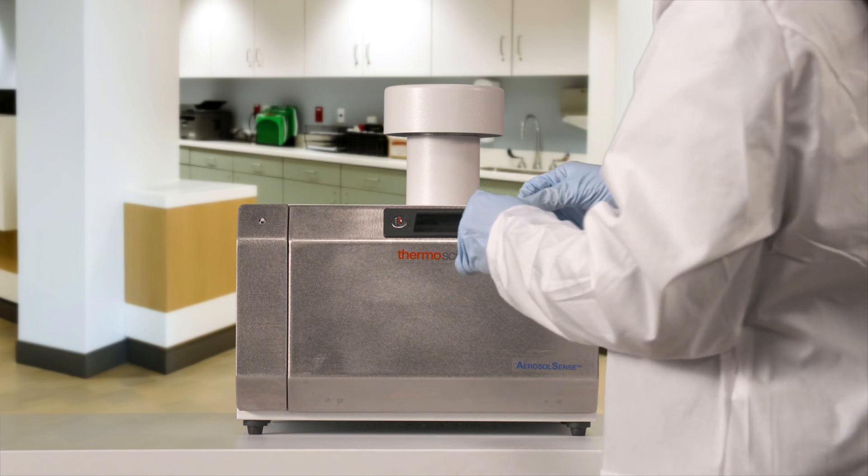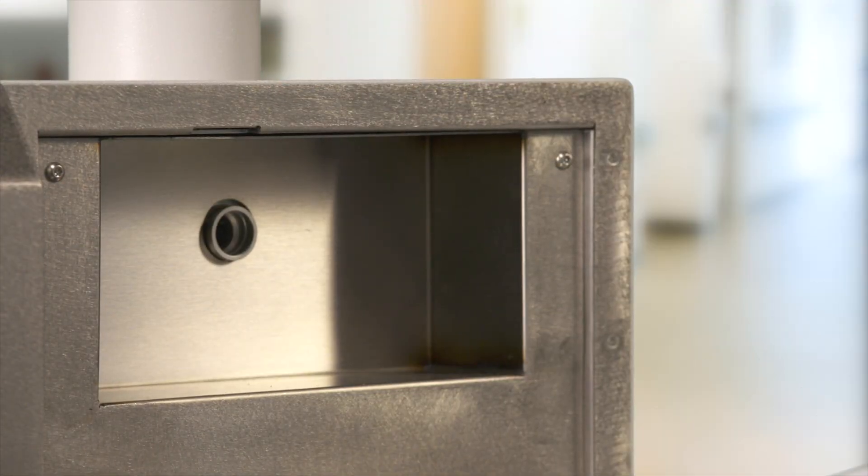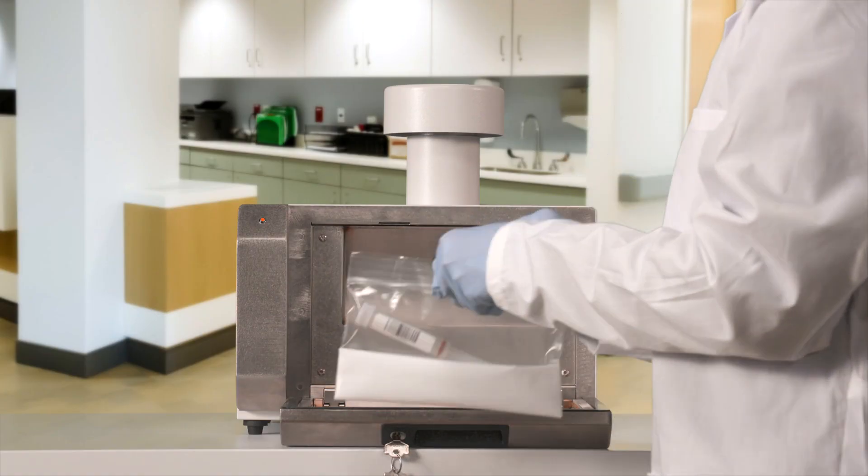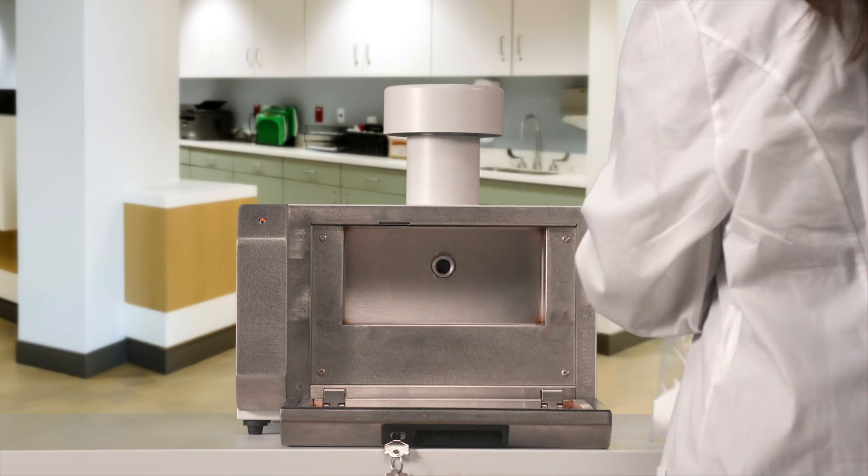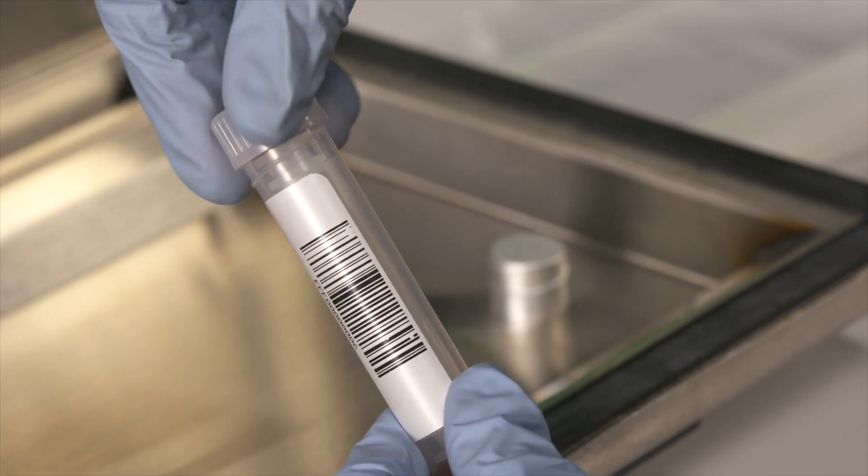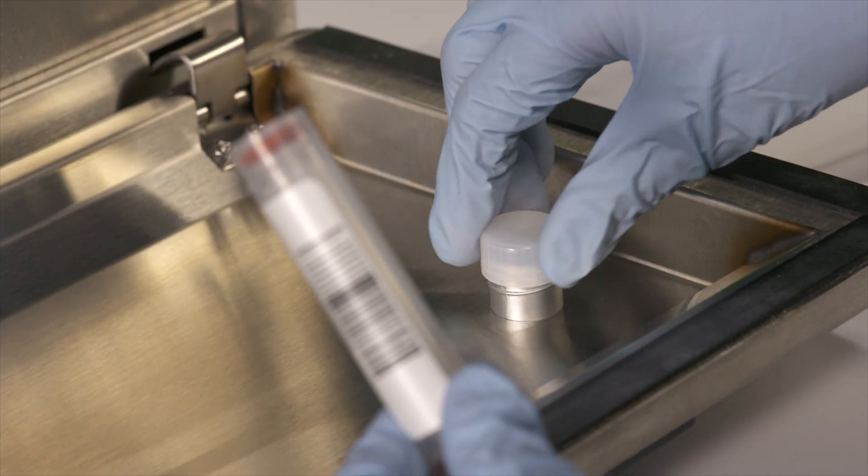To install, simply open the front door of the sampler with the included key. Unscrew the sample cartridge cap and screw it onto the tray for storage.